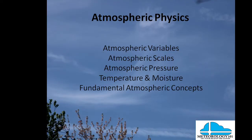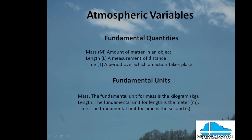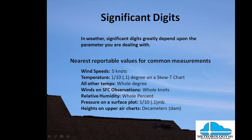Atmospheric physics covers atmospheric variables, atmospheric scales, atmospheric pressure, temperature, moisture, and fundamental atmospheric concepts. For atmospheric variables, the fundamental quantities are: mass — the amount of matter in an object; length — a measurement of distance; and time — a period over which an action takes place. The fundamental unit for mass is the kilogram; weather is pretty much on the metric system. The fundamental unit for length is the meter, and for time it's seconds.